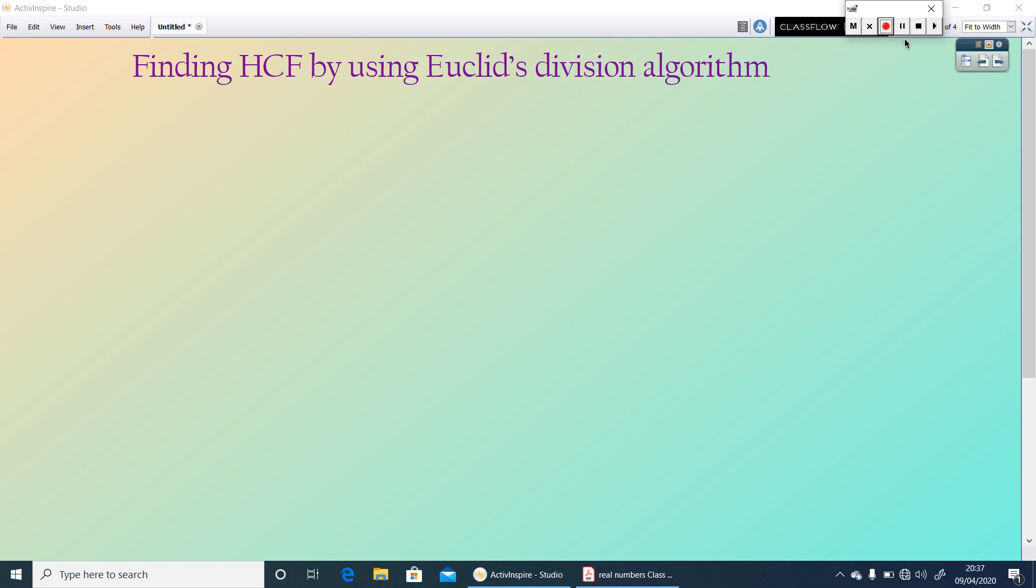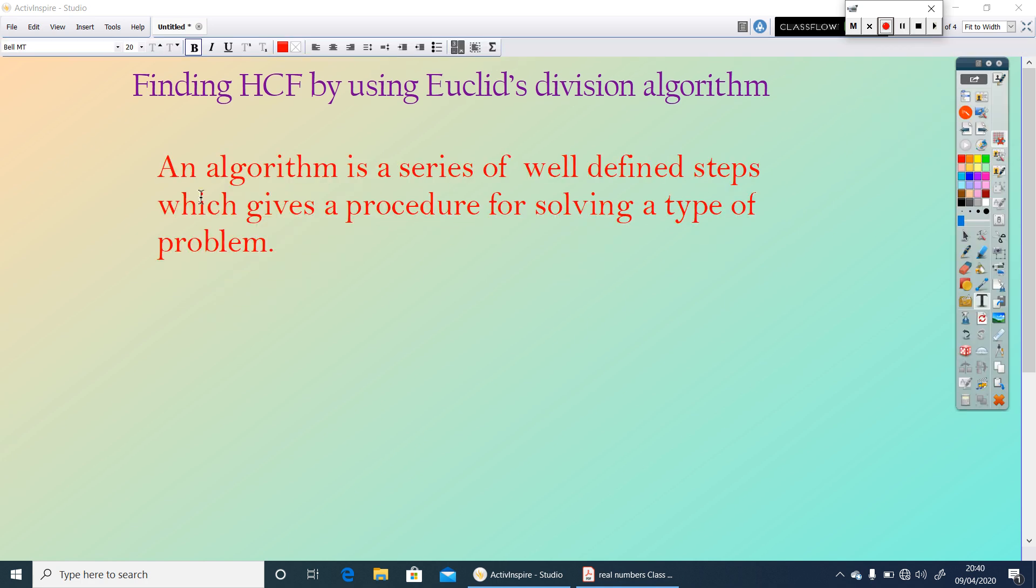You already learned what Euclid's division algorithm is. An algorithm is a series of well-defined steps which gives a procedure for solving a type of problem. That means algorithm is a step-by-step procedure.